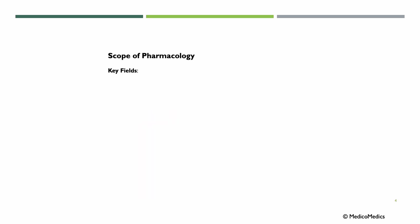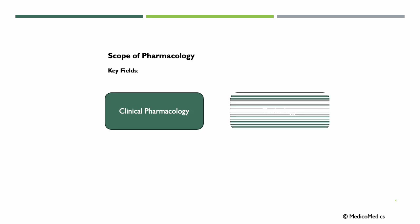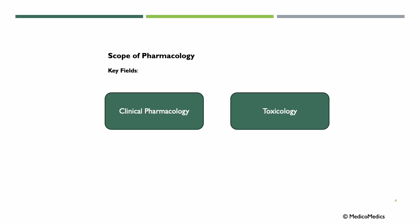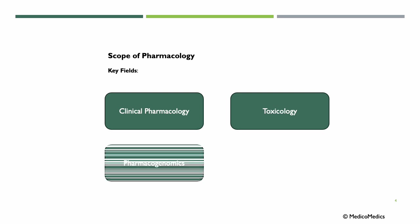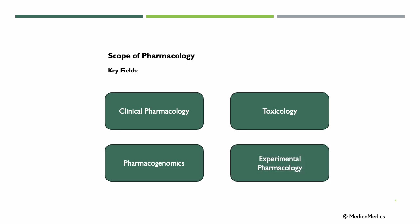When we look at the scope of pharmacology, key fields include clinical pharmacology — the application of drugs to treat diseases — toxicology, the study of harmful effects of substances, pharmacogenomics, the role of genetics in drug response, and experimental pharmacology, which is laboratory research to study drug effects. The application of all of these is to develop safer, more effective drugs and address challenges like antibiotic resistance. For example, pharmacogenomics helps explain why some people respond better to certain antidepressants than others.